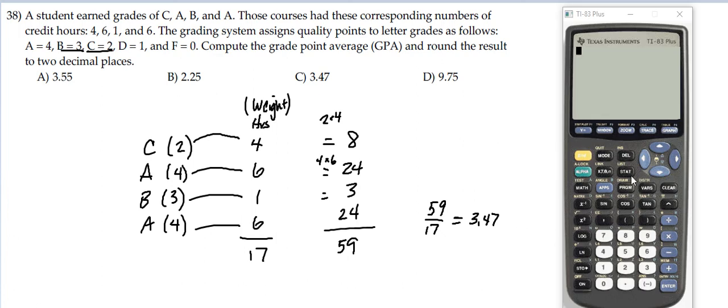With the graphing calculator, press STAT and then ENTER to enter our data. Remember, in list 1 we put the numbers themselves - in this case the grades. The weights or frequencies always go in list 2, so the weights here are 4, 6, 1, and 6, the number of hours.